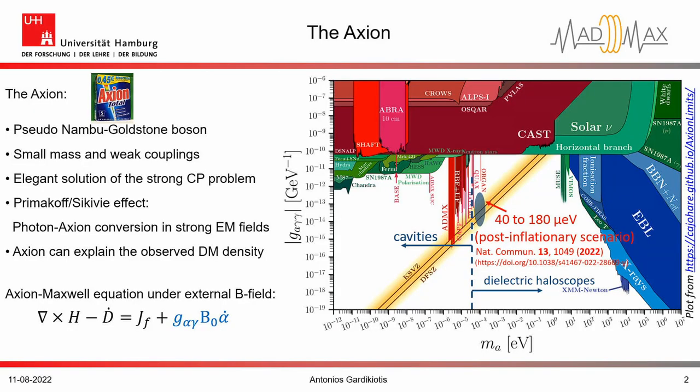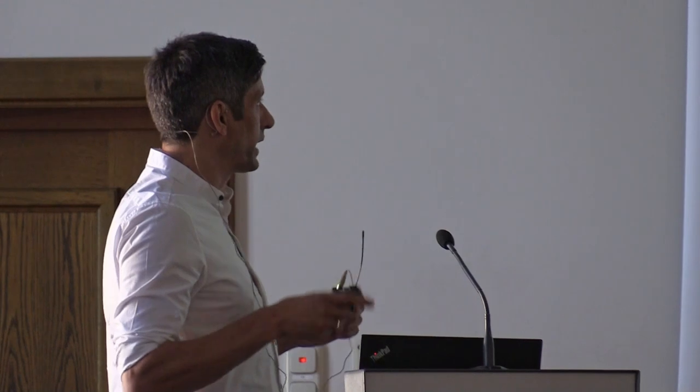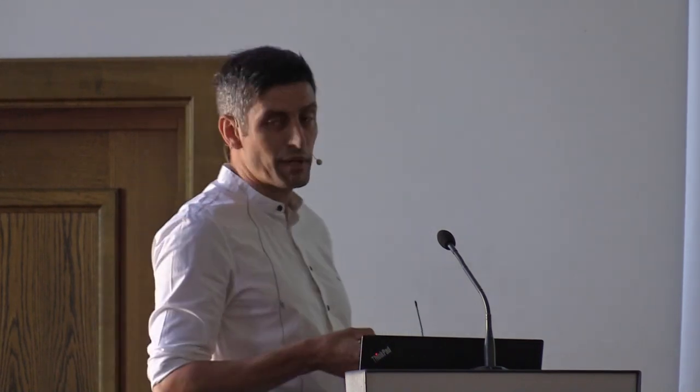A few words about the axion. As we know, it has a very small mass and weak coupling to matter and radiation, but it's an elegant solution of the strong CP problem. It has been proposed via the inverse Primakoff or Sikivie effect that we can have axion-photon conversion inside strong electromagnetic fields. Axions can naturally explain the observed dark matter density, or at least a part of it, and under an external magnetic field, we know that it modifies the Maxwell equations.